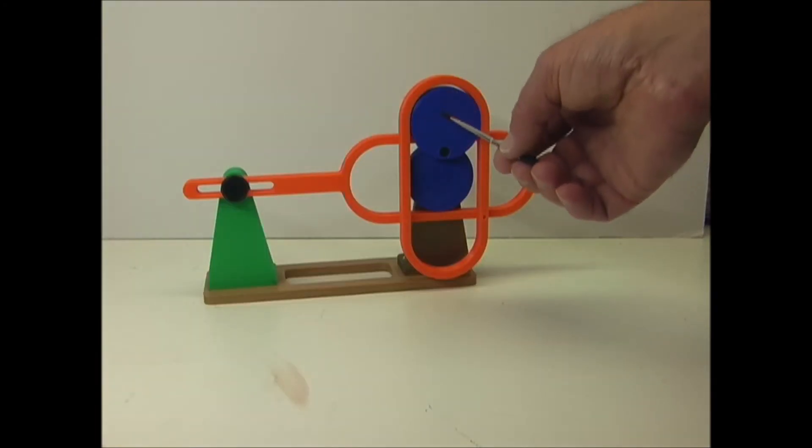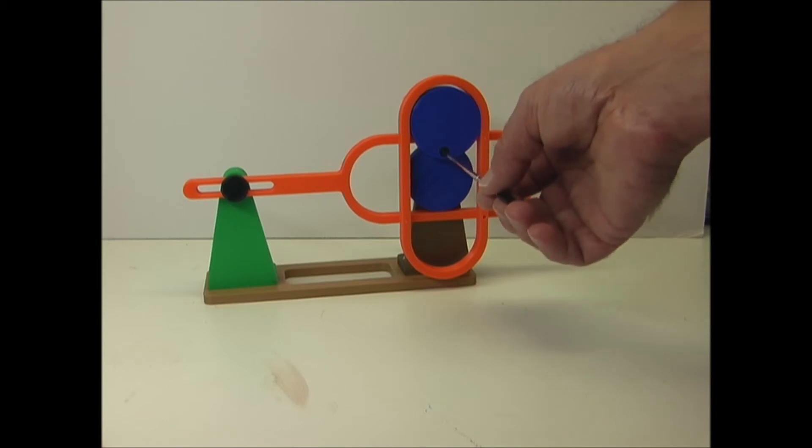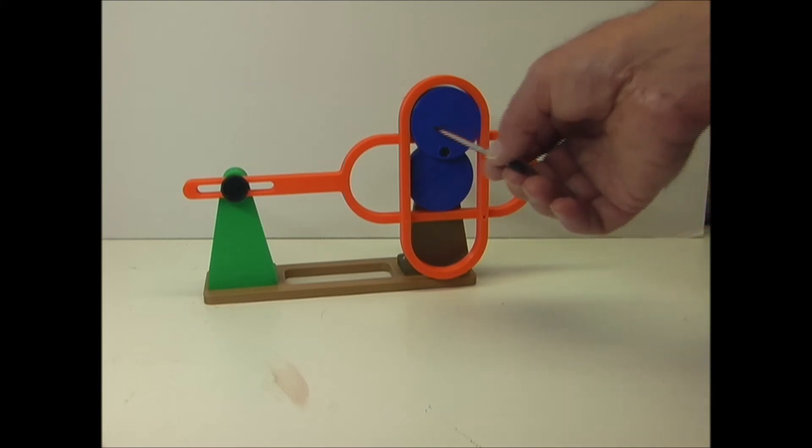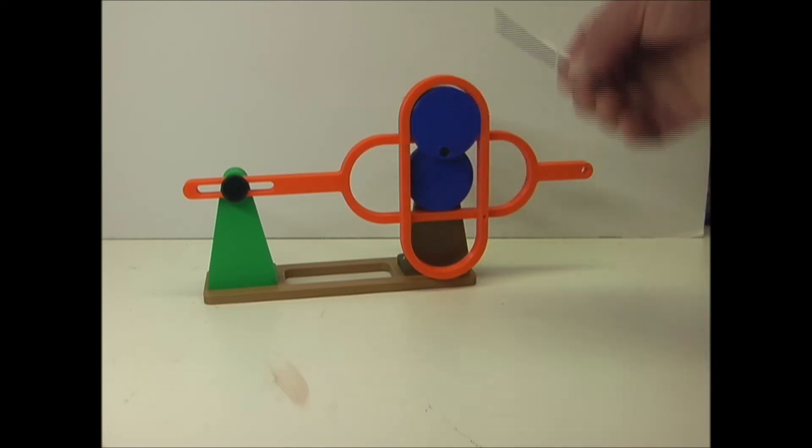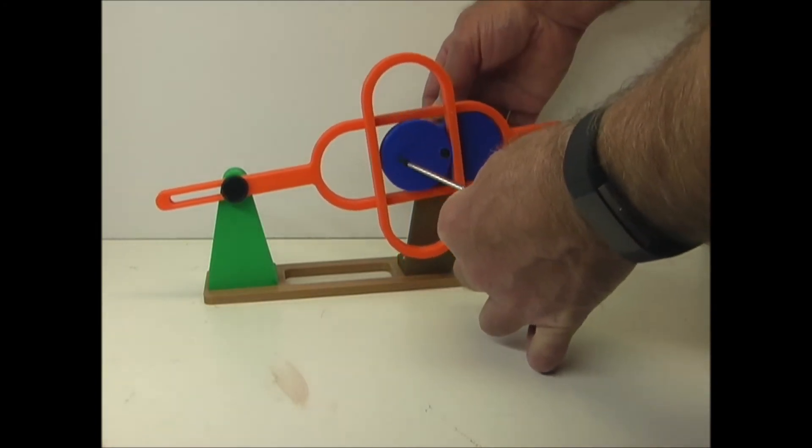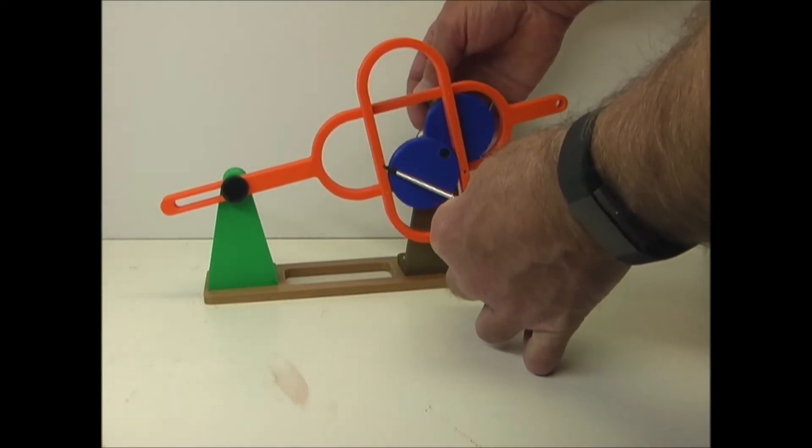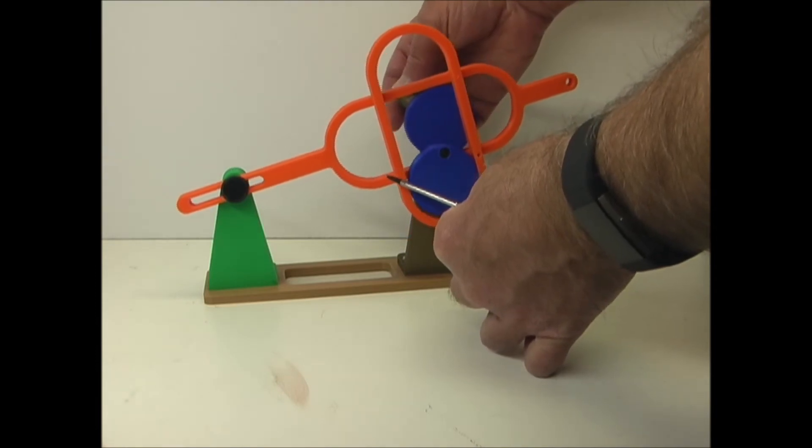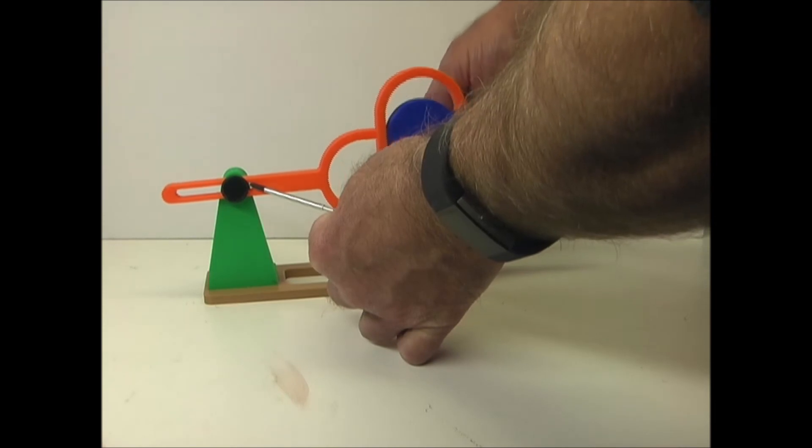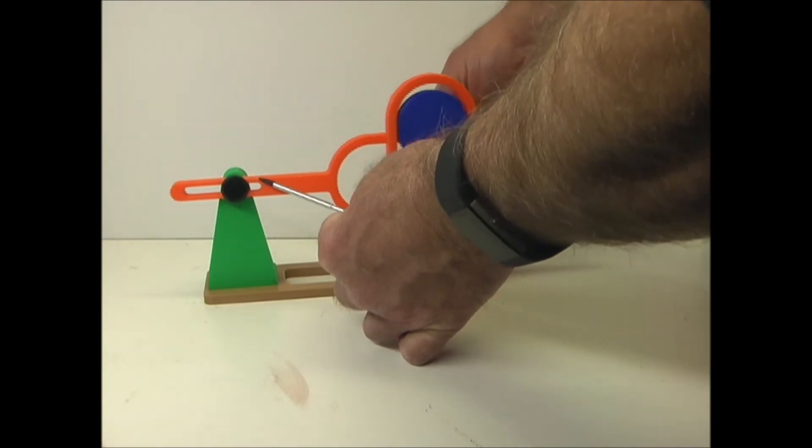This has two wheels in line with each other connected at their outer edges with this pin. This wheel moves in this oval and moves the slider left and right. So as it goes around, it's moving the slider to the left and then back to the right.